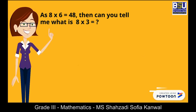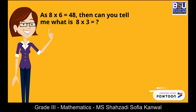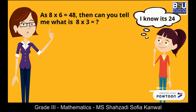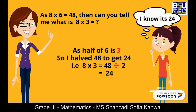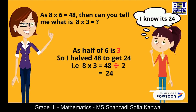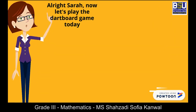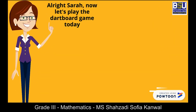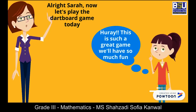As eight times six is forty-eight, can you tell me what is eight times three? I know it's twenty-four. That's right! Could you explain your answer? As half of six is three, I halved forty-eight to get twenty-four. Good job, Sarah! All right, now let's play the dartboard game today!